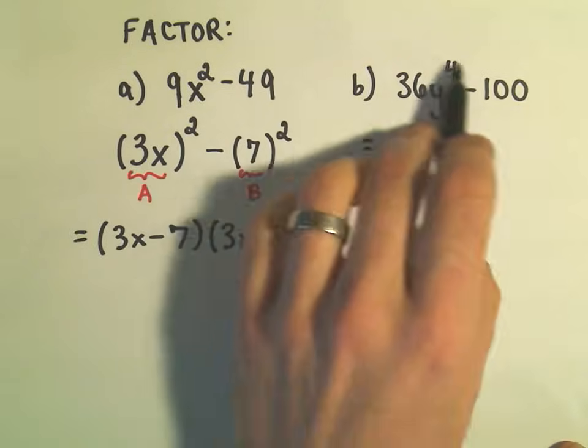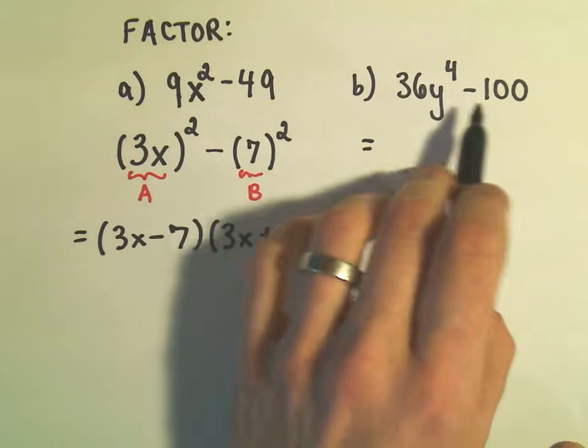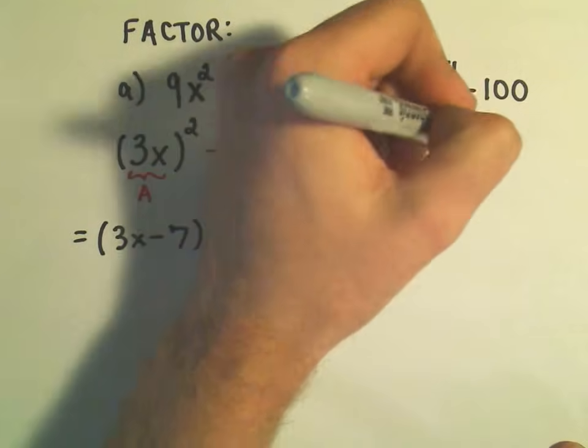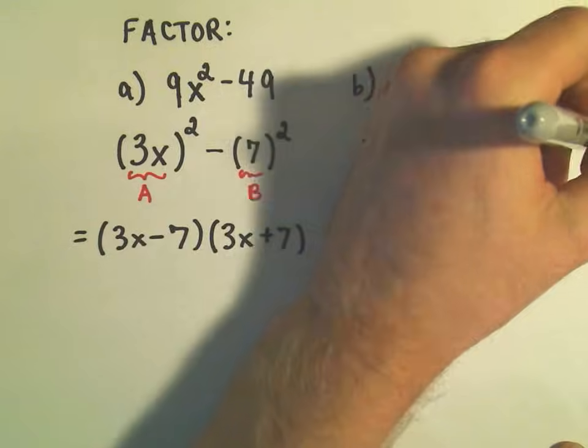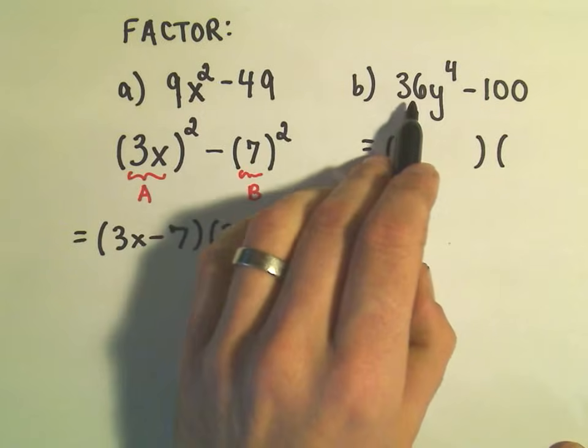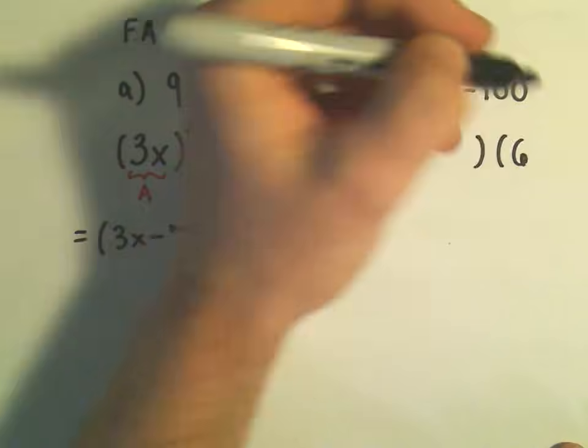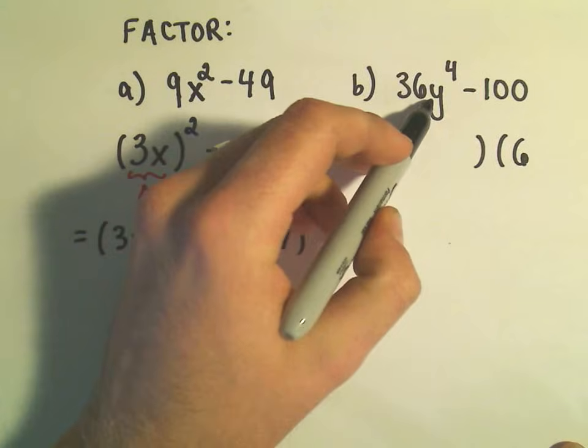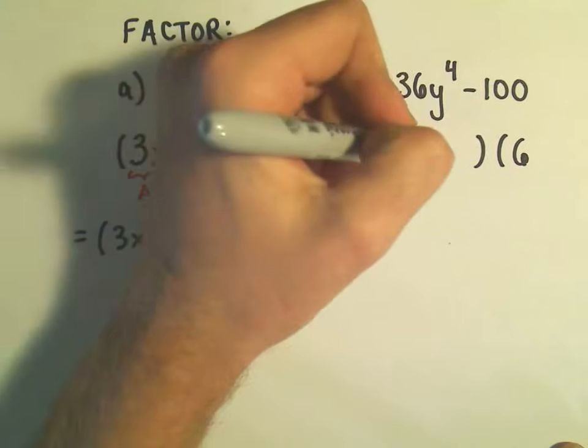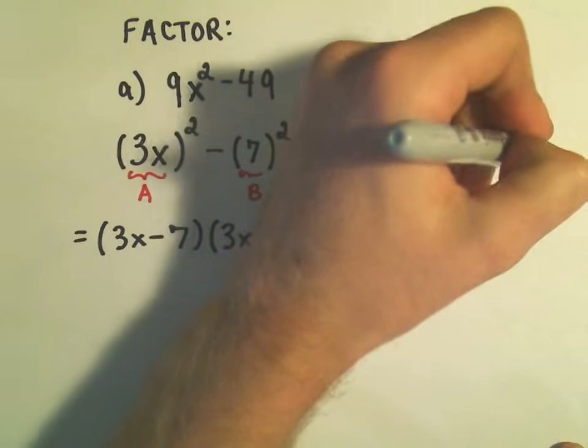36y to the fourth minus 100. So I recognize there's two terms, there's a minus in between, so that's going to factor. I think what number times itself is 36? Well, I would need a 6 and a 6. What would I have to multiply by itself to get y to the fourth? We would need y squared and y squared.